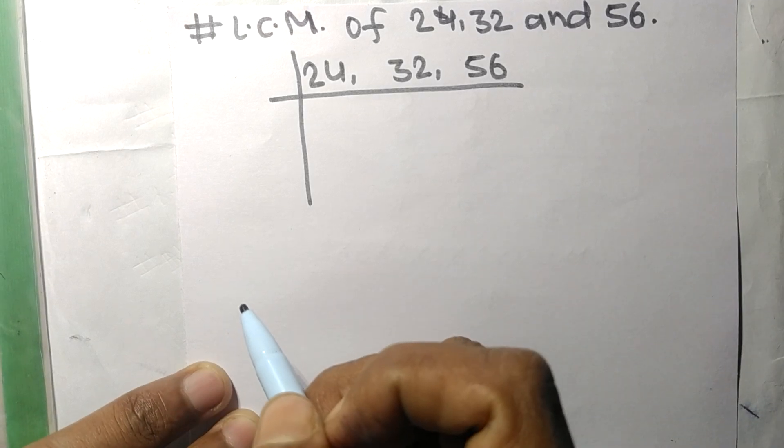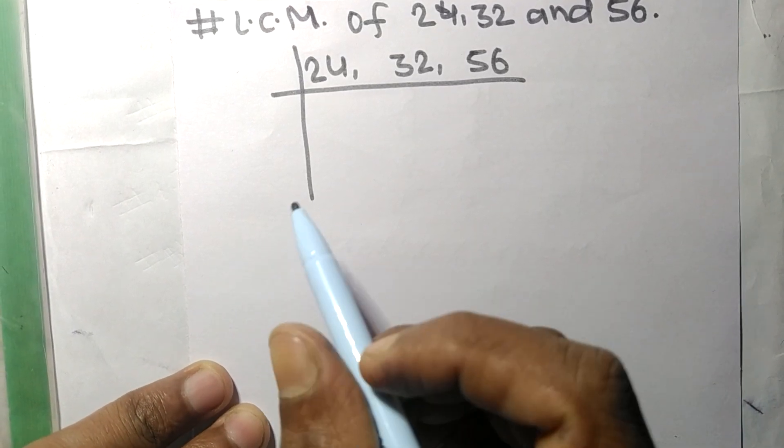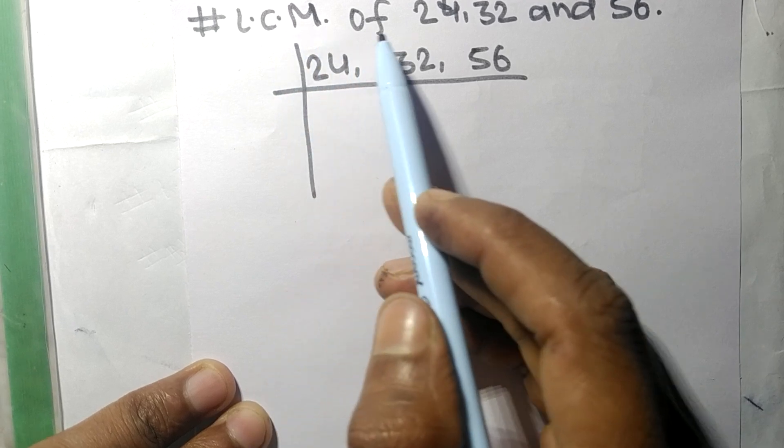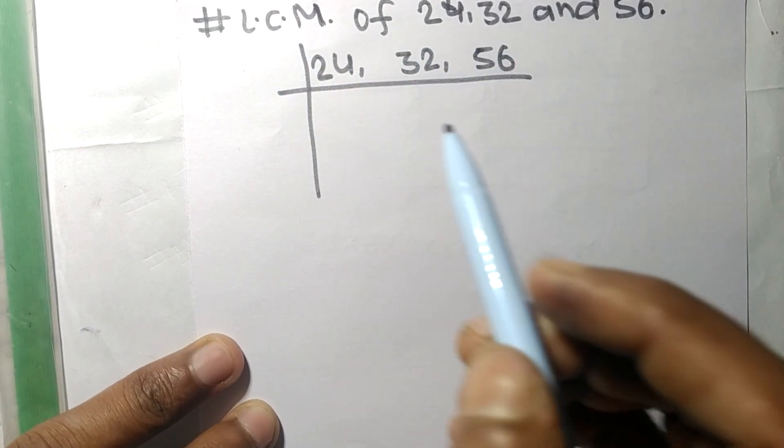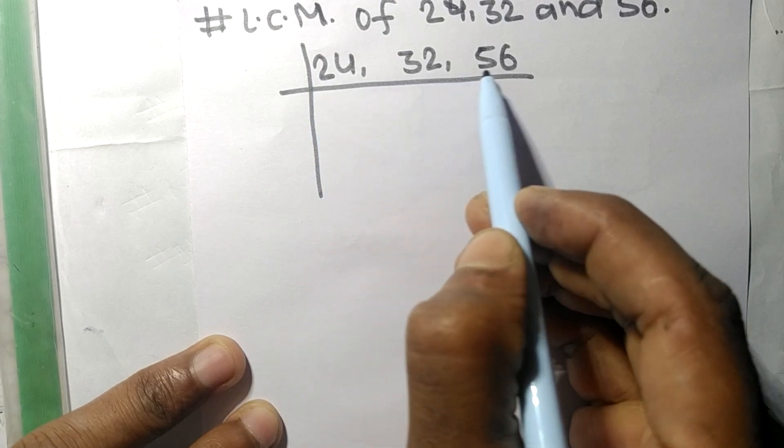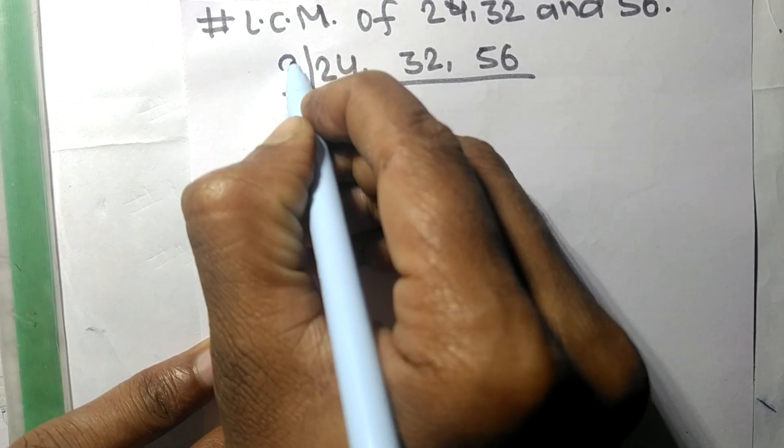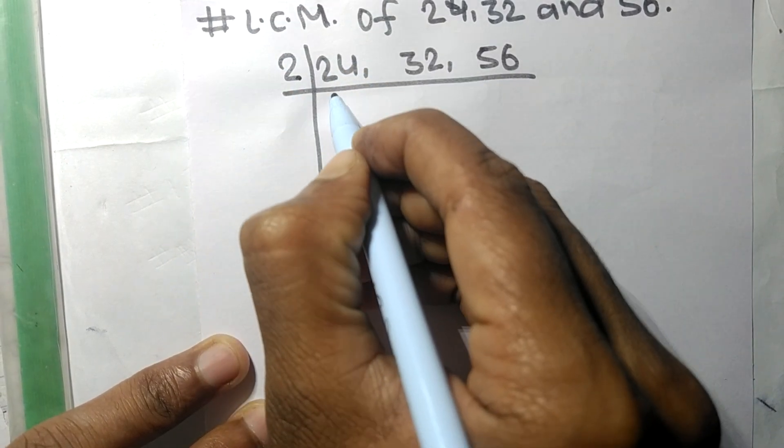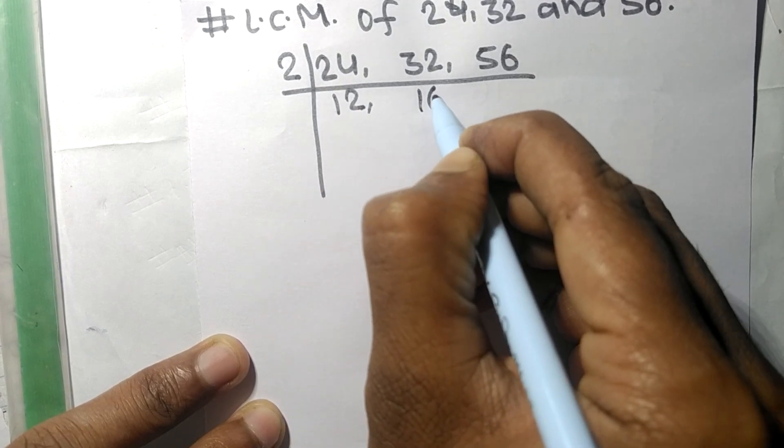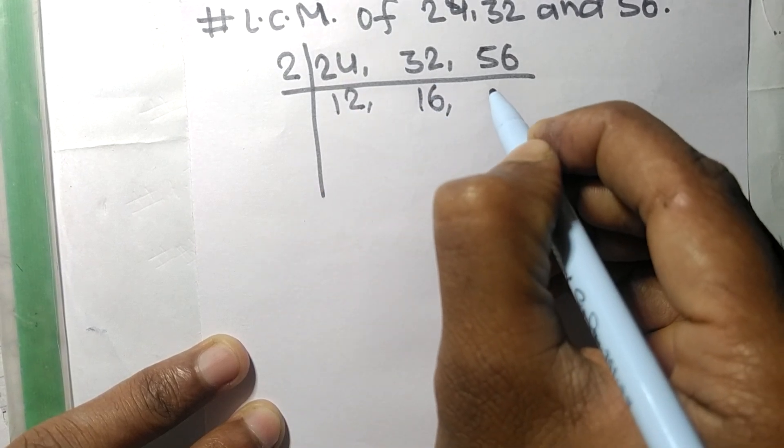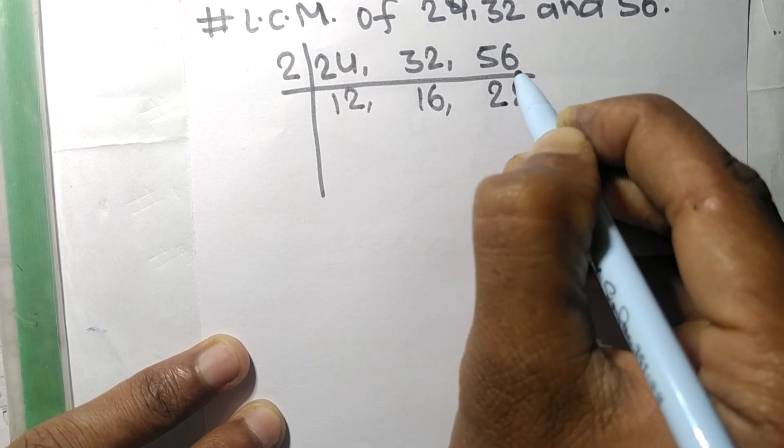Today in this video we shall learn to find LCM of 24, 32, and 56. These all numbers are divisible by 2. So 2 times 12 means 24, 2 times 16 means 32, 2 times 28 means 56.